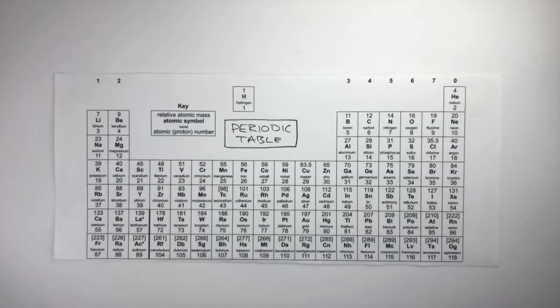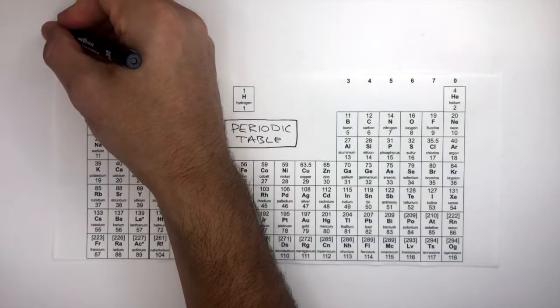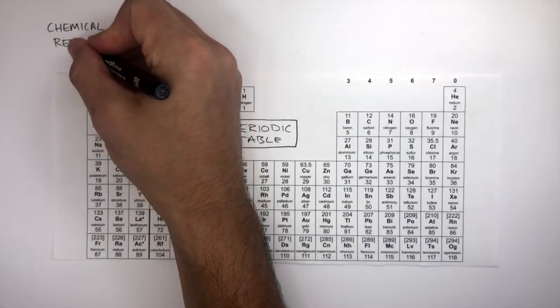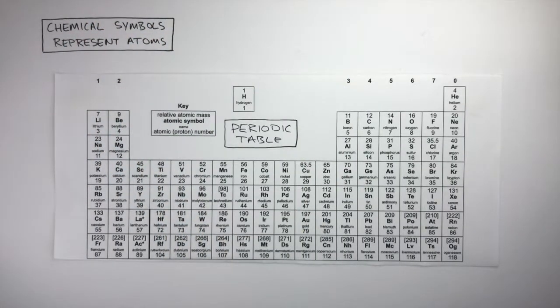The Periodic Table contains all of the naturally and man-made elements that we know about. Chemical symbols represent atoms. And these chemical symbols are the same in any country you go to.